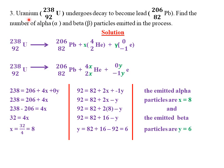The third example: uranium with mass number 238 and atomic number 92 undergoes decay to become lead with mass number 206 and atomic number 82. We need to find the number of alpha and beta particles emitted. Alpha particles are denoted by helium (mass number 4, atomic number 2), and beta particles by an electron (mass number 0, atomic number negative 1). We let the number of alpha particles be x and the number of beta particles be y.